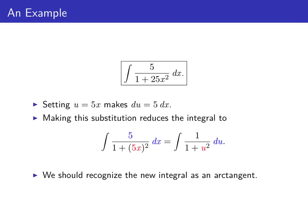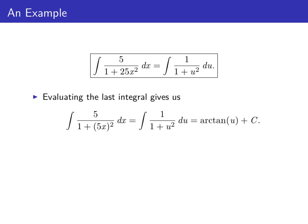Now this last integral is one we should recognize as an arctangent. So evaluating that last integral gives us the integral of 5 over 1 plus 5 x squared dx is the integral of 1 over 1 plus u squared du is the arctangent of u plus a constant.